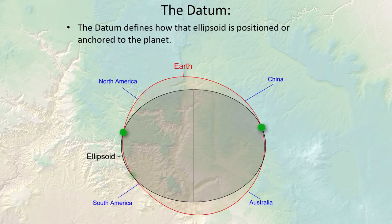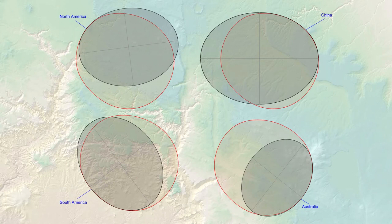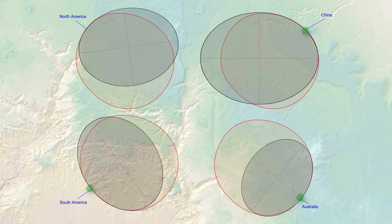Notice how the ellipsoid does not conform equally well to all parts of the earth's surface — it might fit well near the equator but be far off near the poles. We define different datums depending on what part of the earth we want the ellipsoid to conform to. We rotate and resize the ellipsoid and anchor it to the surface so it most closely matches the area we're interested in, and historically we've done this differently for different regions.